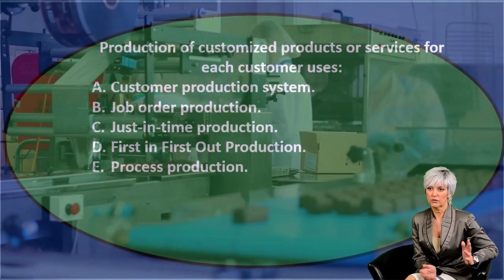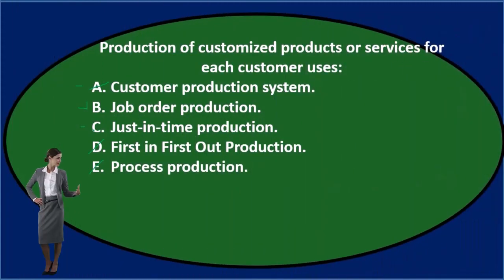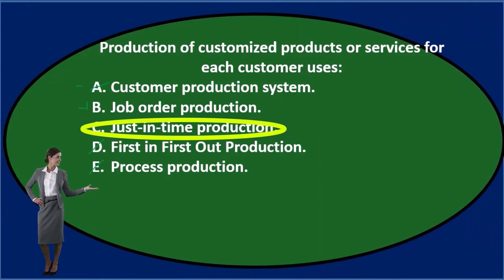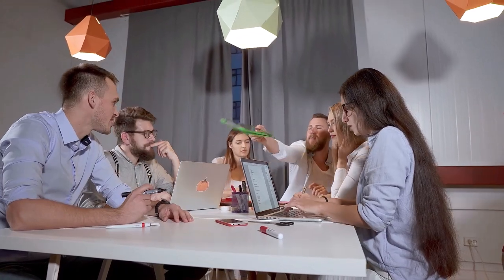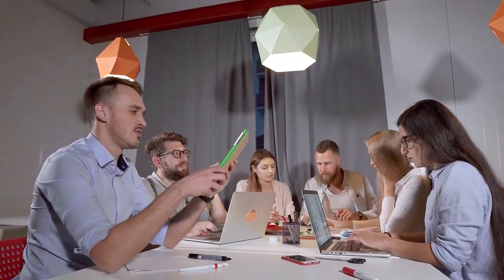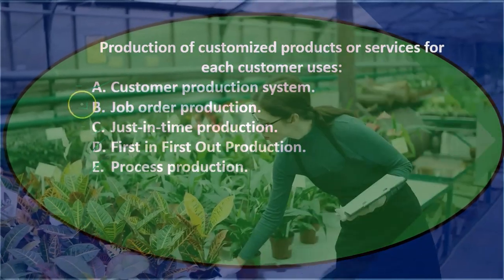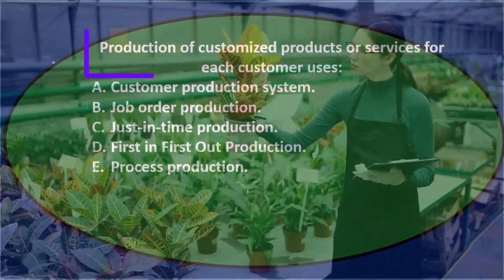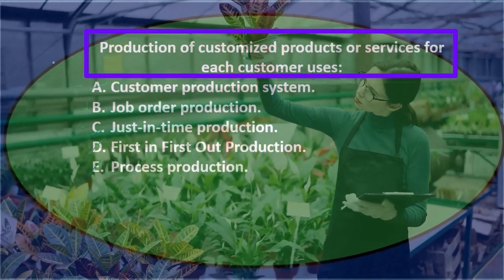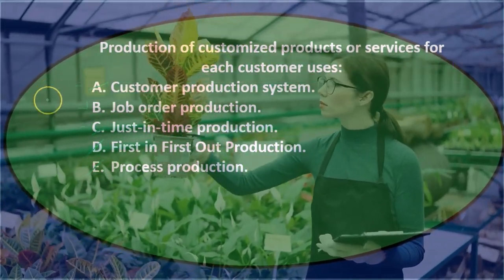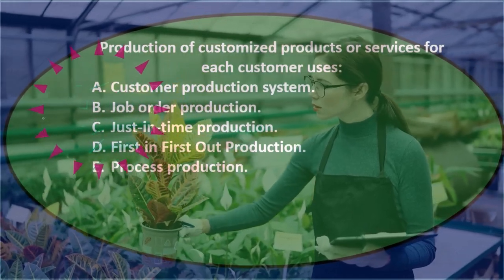Option C — just-in-time production — is clearly something we've heard of, and it may allow for some customization, but it really has to do with how fast we put things together and how we structure our process, not with the type of costing system. We could use a just-in-time system, but most likely, because of the customization, we are using a job order production. So the final answer: production of customized products or services for each customer uses B) job order production.